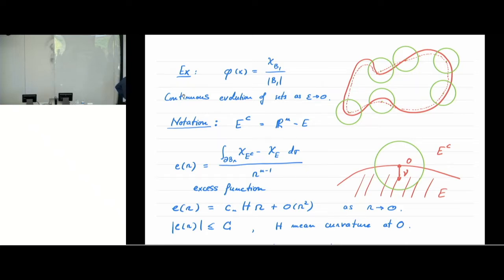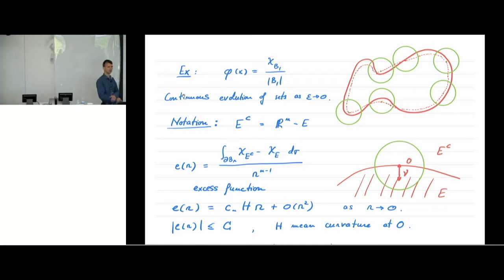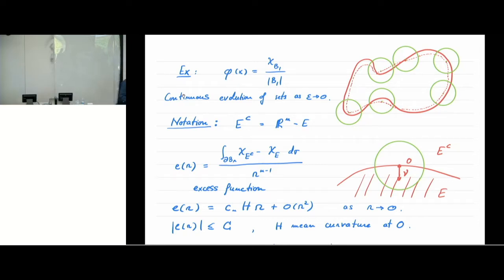The dotted line shows how the original set E moves after one iteration. You repeat this iteration over and over. As epsilon tends to zero, you expect to see a motion of sets. The question is: what is the law governing this motion? Are there any questions about this BMO scheme so far?